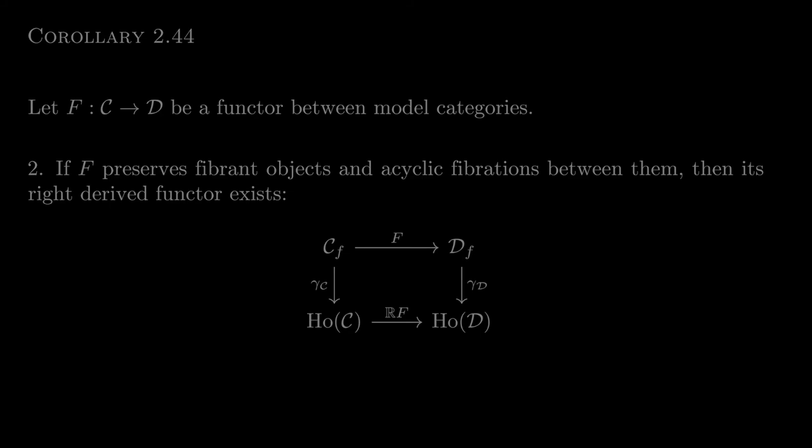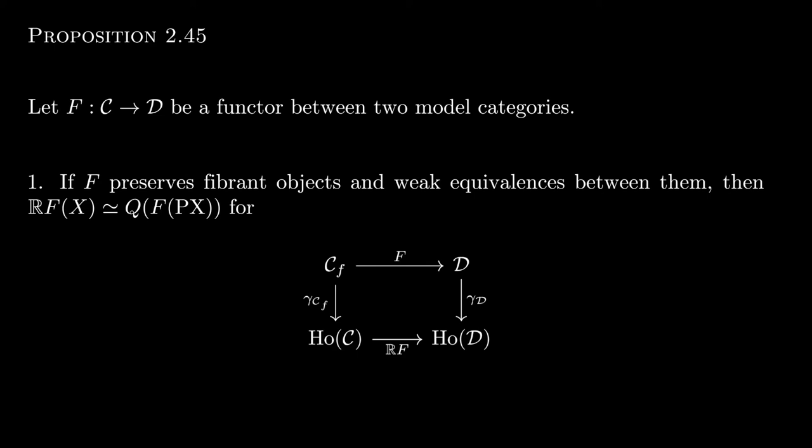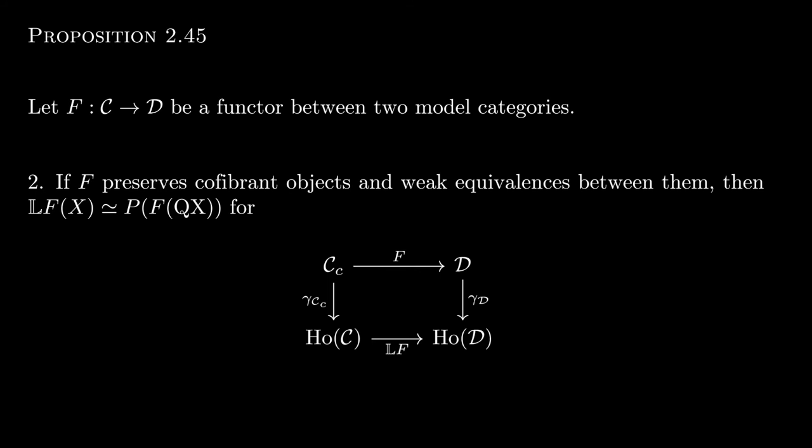We know these derived functors send weak equivalences to weak equivalences under the hood, but what do they do to objects? If F preserves fibrant objects and weak equivalences between them, then the total right derived functor sends an object x in C to the cofibrant replacement of F of the fibrant replacement of x, i.e., QF of Px. Dually, if F preserves cofibrant objects and weak equivalences between them, then the total left derived functor sends x to PF of Qx.